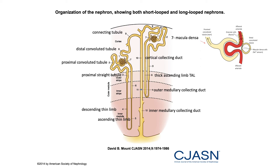Number one is the glomerulus. After that, we have the proximal convoluted tubule — convoluted because it makes all these loops and turns. Number three is the proximal straight tubule, so the proximal tubule has two parts: a convoluted part and a straight part. This is followed by the thick descending limb. What matters more to us is the thin limb of the loop of Henle, which is like a hairpin — it goes down and then up. Number four is the descending thin limb, number five is the ascending thin limb.